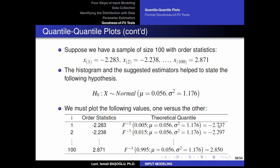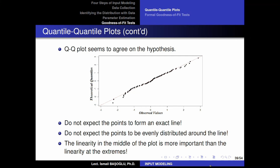For my first index, (1 minus 0.5) divided by 100 gives 0.005. The theoretical quantile of the null hypothesis distribution at 0.005 gives minus 2.737. For the second it gives minus 2.297. For the last index, (100 minus 0.5) divided by 100 gives 0.995, and the theoretical quantile is 2.85. We check whether every order statistic is close to its corresponding theoretical quantile value, then draw the plot diagram of observed values against theoretical quantiles.